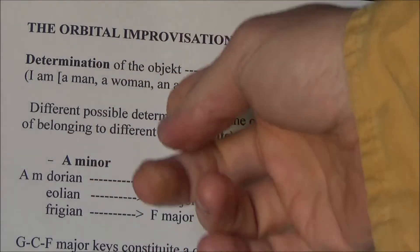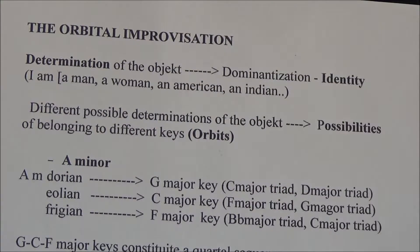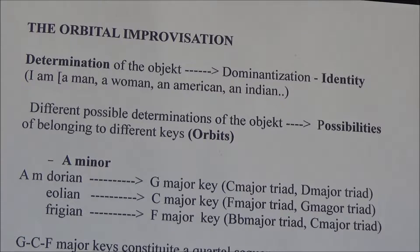I am a man, I am a woman, I am an American, or I am an Indian, and so on. A sound could be determined in different ways. We get different possibilities in the determination of the object — the possibilities of belonging to different keys, so to say, to different orbits.